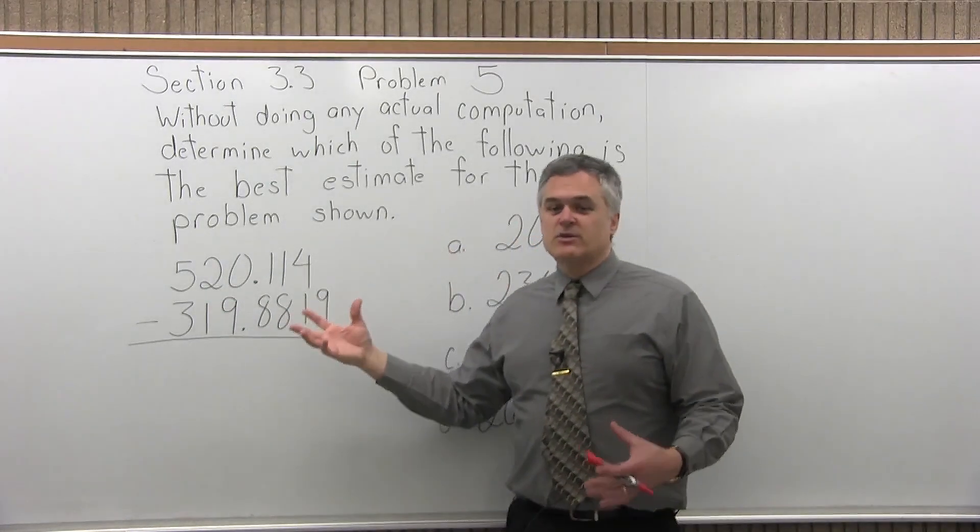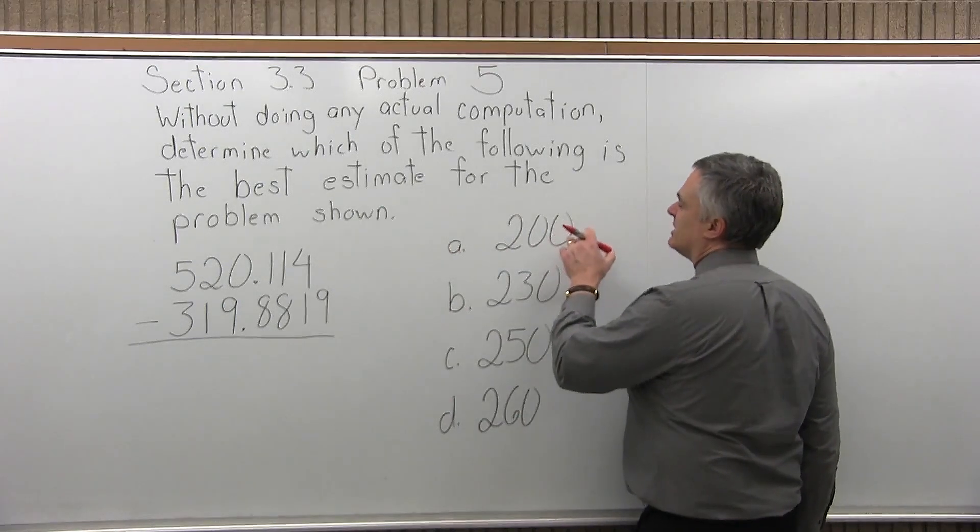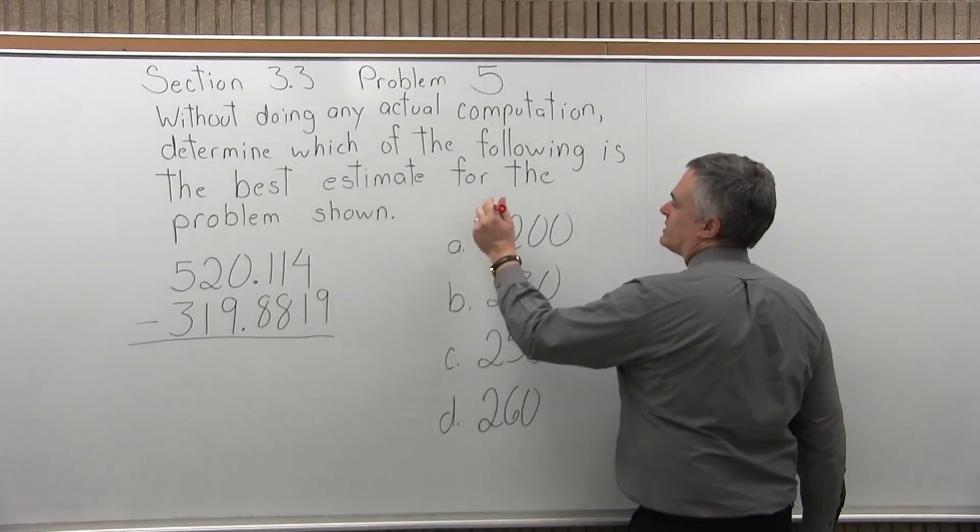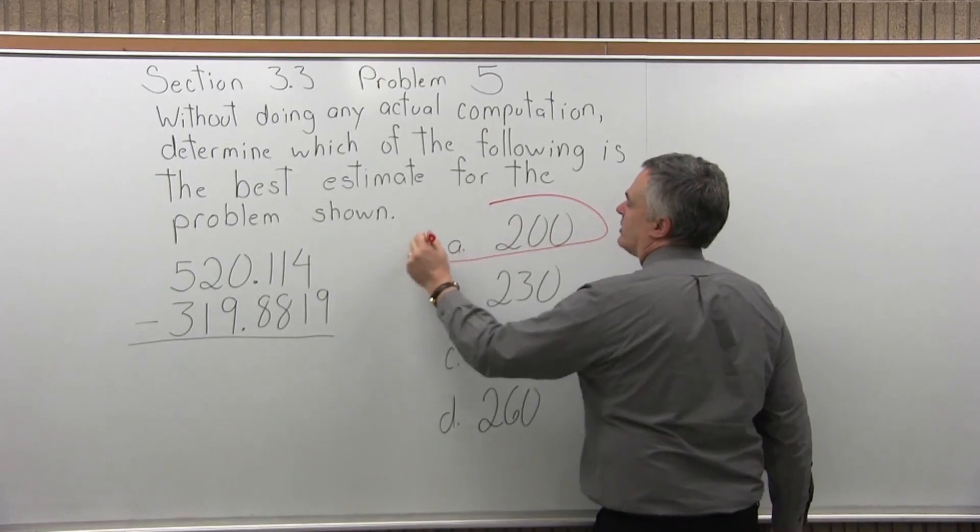So it won't be exactly 200. You'll have some decimals that will be close, but that's a good estimate. The answer, if you do that subtraction exactly, will be very close to 200.